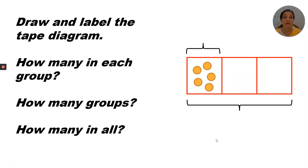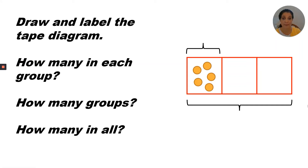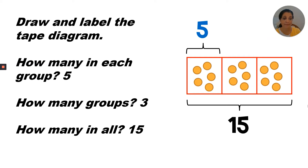Draw and label the tape diagram. How many in each group? How many groups? How many in all? We don't know how many are in all, but we do know how many are in each group and how many groups there are. So we can label that there are five in each group. We can write that there are three groups, so this would be the divisor. We don't know how many there are in all, so we cannot label the bottom number.